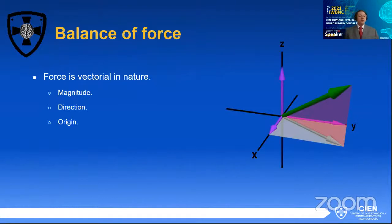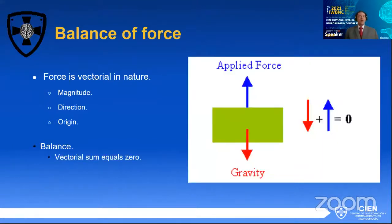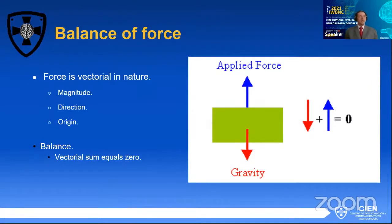Now, what is a force? A force has a vectorial nature — it has an origin, a magnitude, and a direction. When applied to an object, this is very important, because when you see an object pulled by gravity, for that object to not move, you're going to have to have a countervailing force against gravity. That force is going to be acting constantly against gravity to maintain equilibrium, therefore no movement. For balance to exist, the sum of the vectorial forces must be equal to zero.